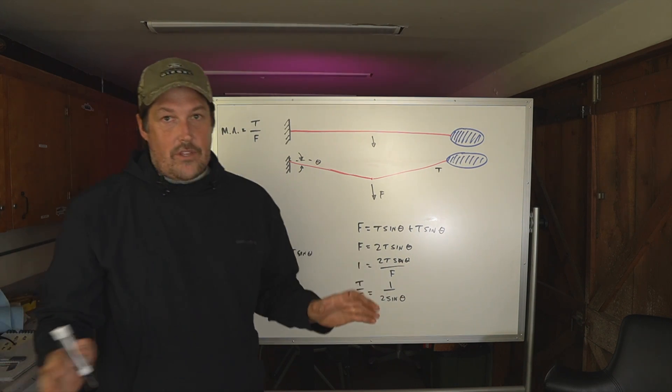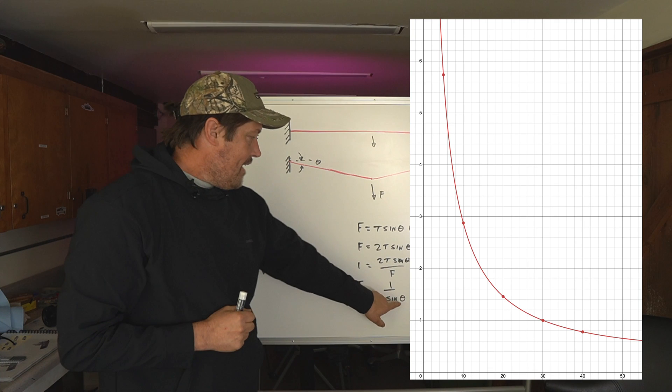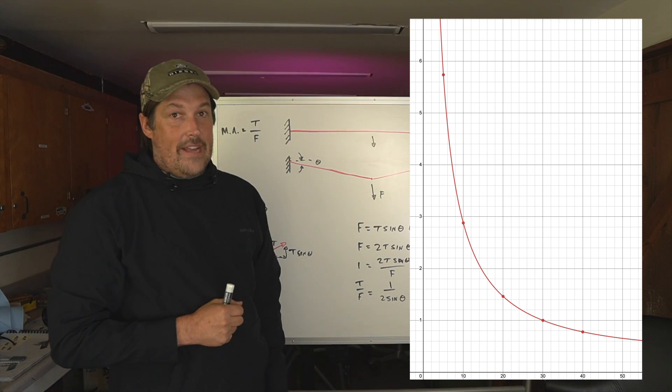And this is an equation for the mechanical advantage based on the angle that's created. And we can graph this. I'll put a graph up somewhere showing this. It's when theta is small, the mechanical advantage is very large.